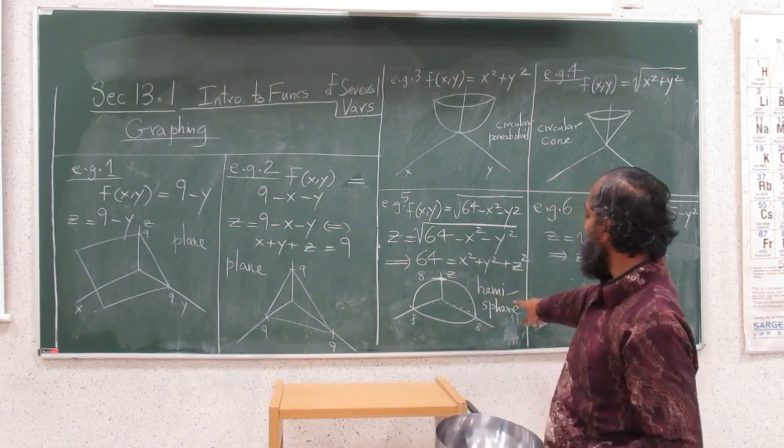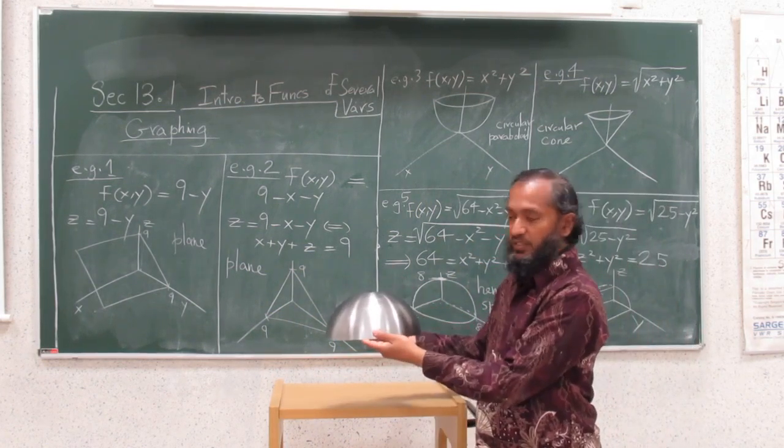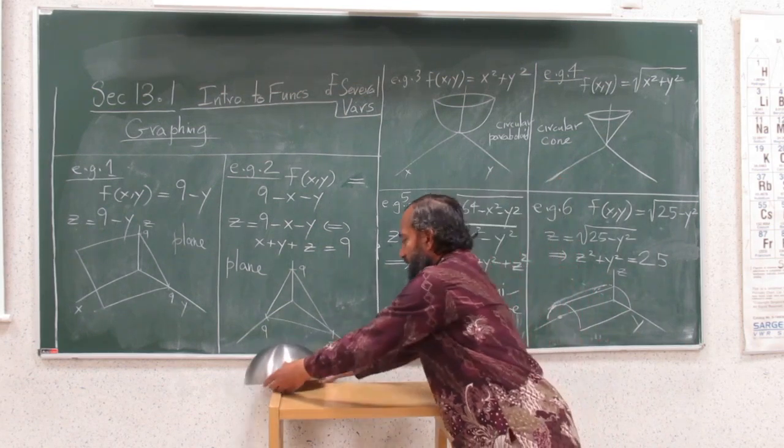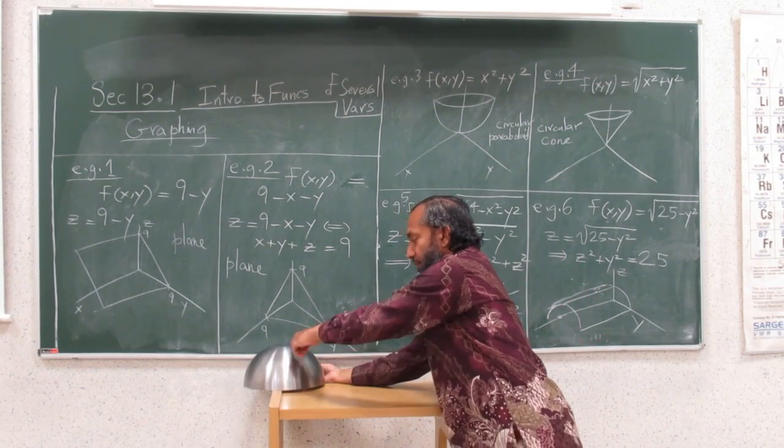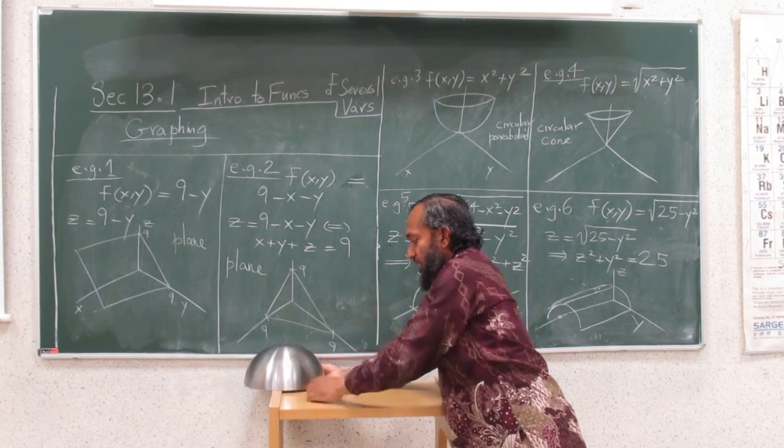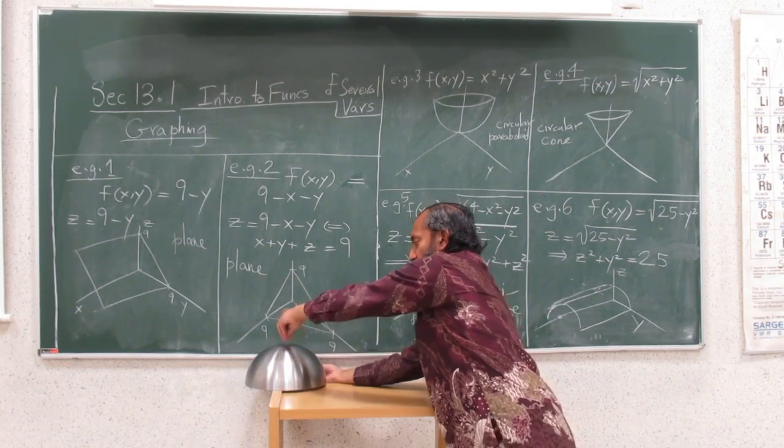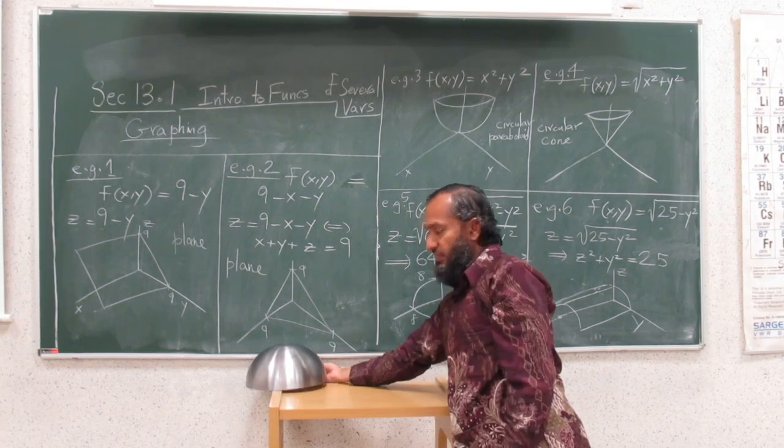This hemisphere, right? Think of it, this is the top half of the sphere of radius 8 and centered at the origin, like this. I mean, centered meaning the top is above the origin, and this is radius 8 circle, and this is the top half of that sphere.